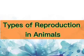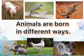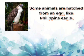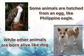Types of reproduction in animals. Animals are born in different ways. Some animals are hatched from an egg, like the Philippine eagle, while other animals are born alive, like the dog.